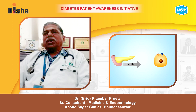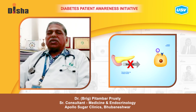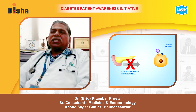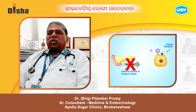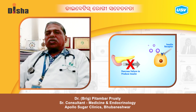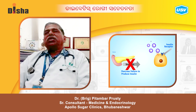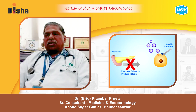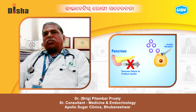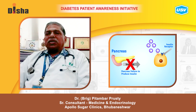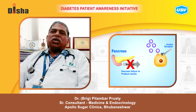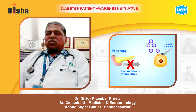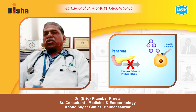As we know, the pancreas is important for insulin production. Even if there is less insulin, it is difficult to prevent diabetes.